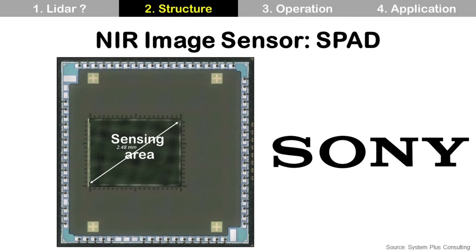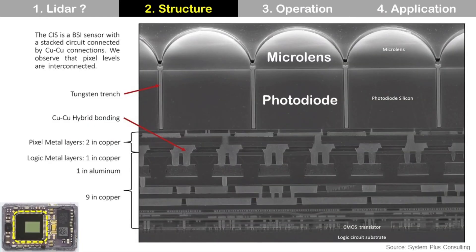This is a NIR CIS, a near-infrared CMOS image sensor. At the center, there is a sensing area with pixels. This image sensor is made by Sony. This is a cross-section of the CIS. I will not explain it in detail here because there are too many technologies to cover — maybe sometime later. Reflected IR light from the target enters through the micro-lens at the top, then arrives at the photodiode underneath.